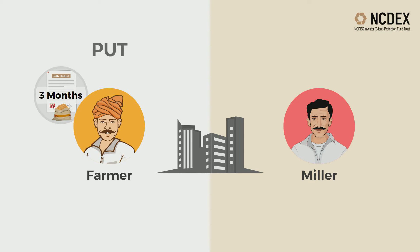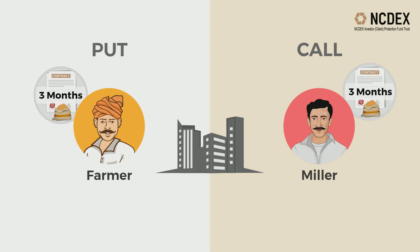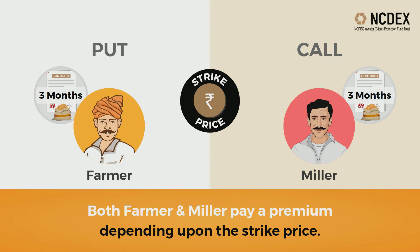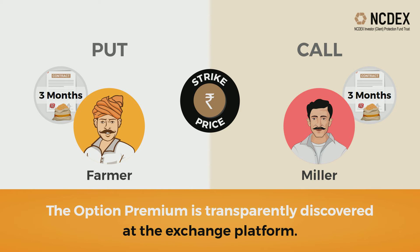To hedge risks due to price variations, the farmer buys a three-month Chana put option, which gives him the right to sell Chana when his crop is ready. While the miller buys a three-month Chana call option, which gives him the right to buy Chana when he needs it for milling. Both farmer and miller pay a premium depending upon the strike price, and the option premium is transparently discovered at the exchange platform.